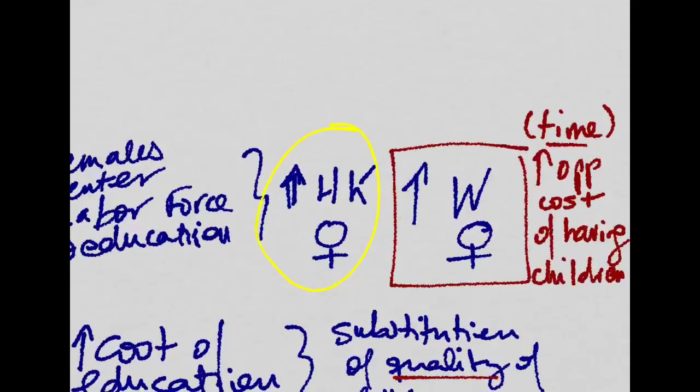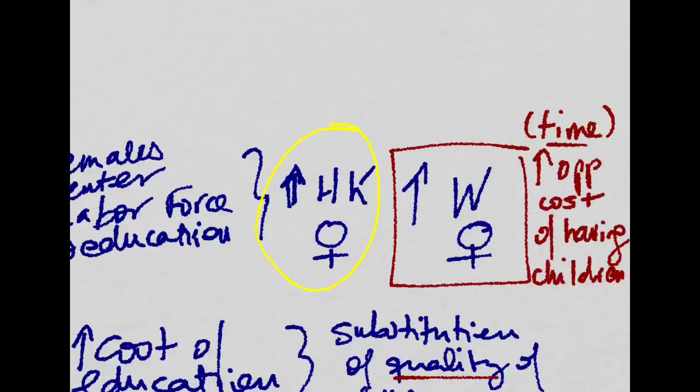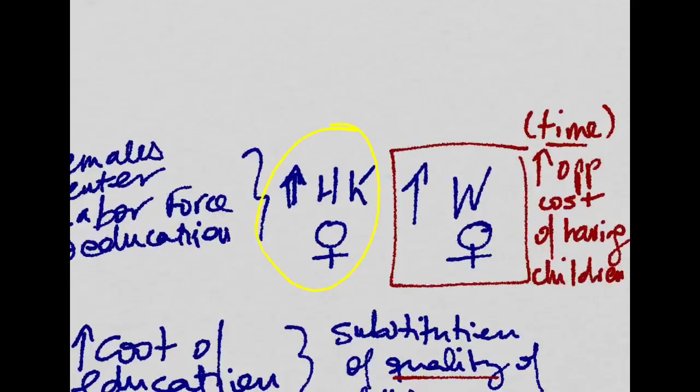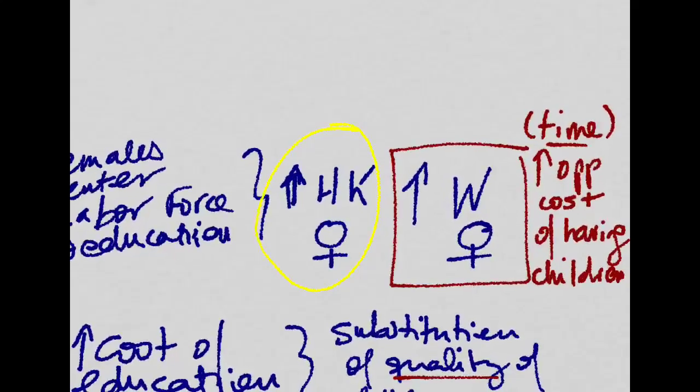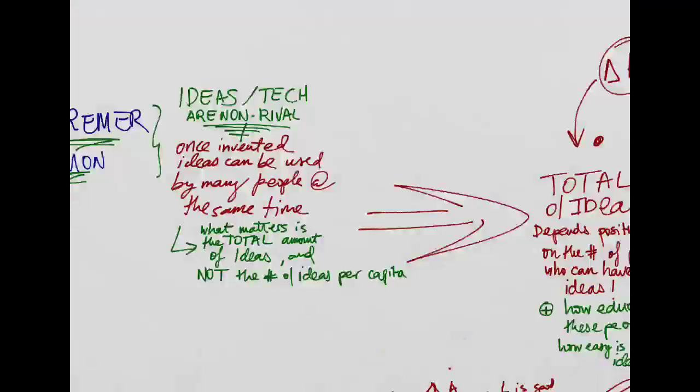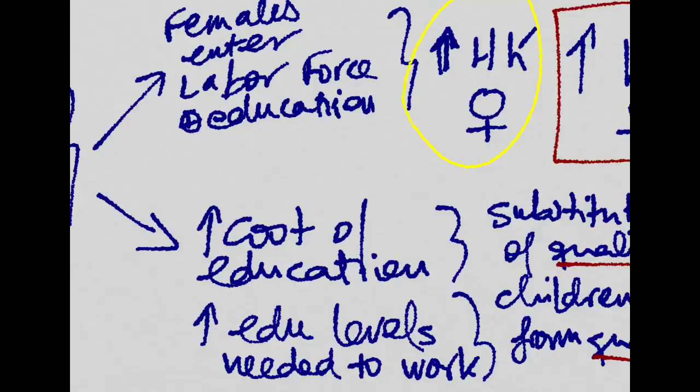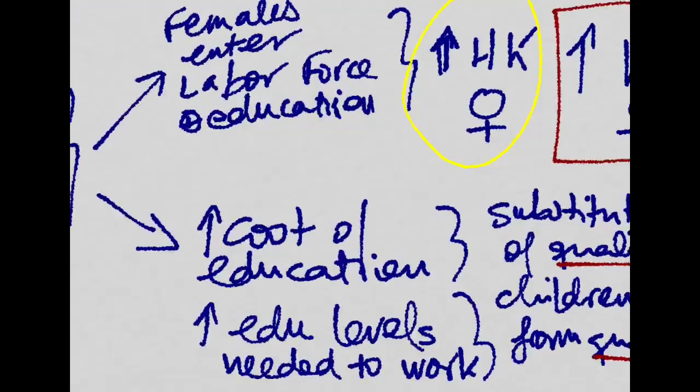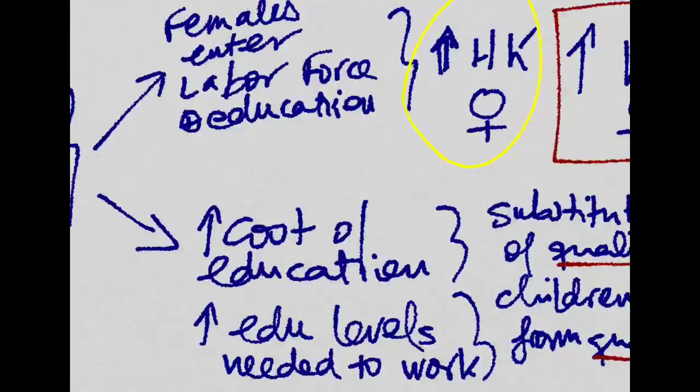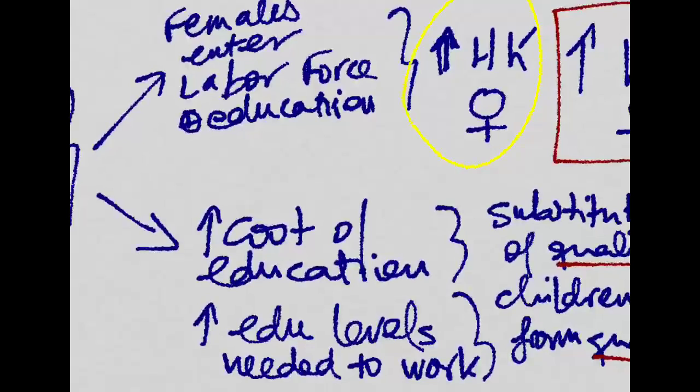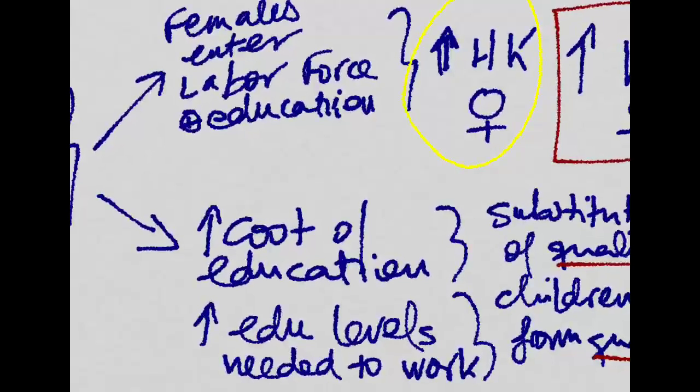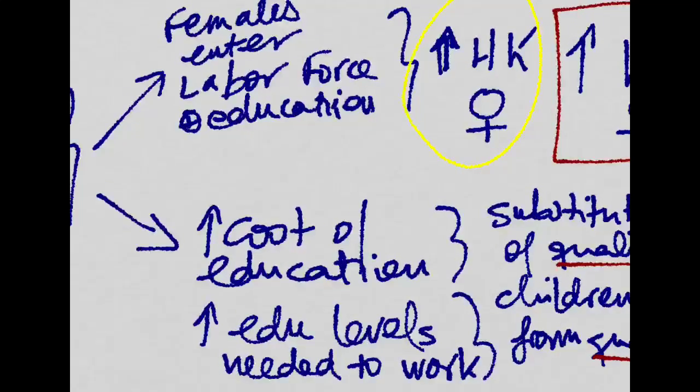For a family, the costs in terms of opportunity cost of having a higher number of children would increase dramatically as economies become richer. And also, as economies develop, the cost of education and the level of education that is needed per child to be able to be successful in the labor market is higher. So there's more tuition costs and more other education-related costs attached to each child.